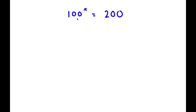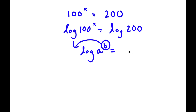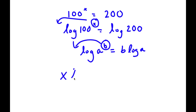In this problem I have 100 to the power of x is equal to 200. To solve this I'll start by taking the log on both sides, giving log of 100 to the power of x equals log 200. Since I can move the exponent to the front, I get x times log 100 equals log 200.